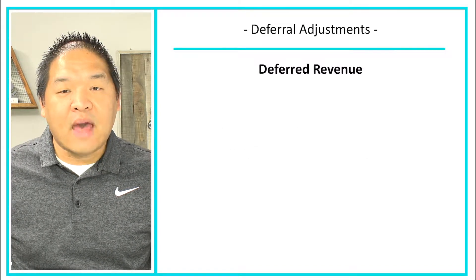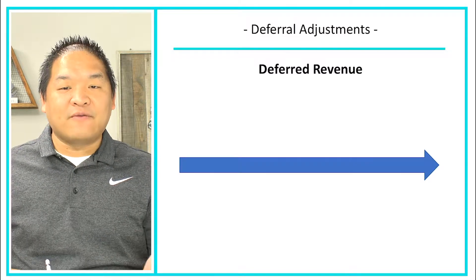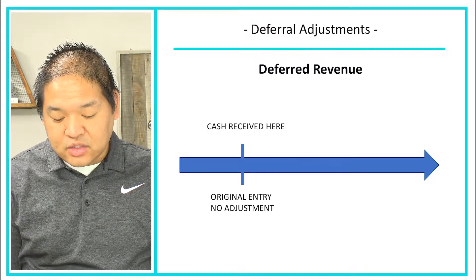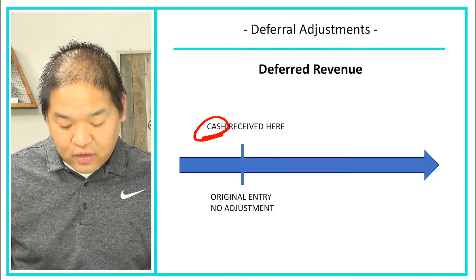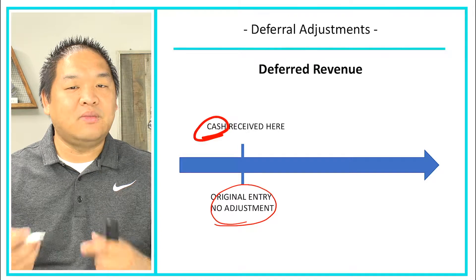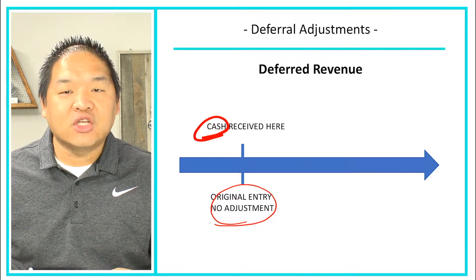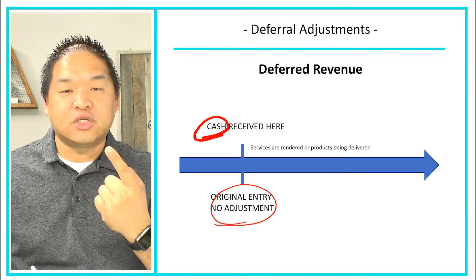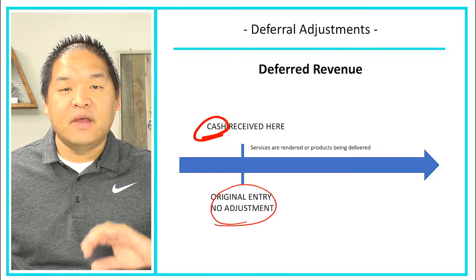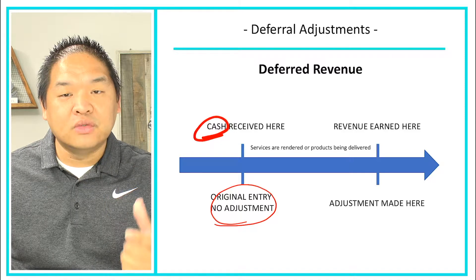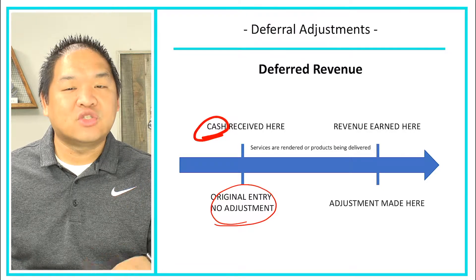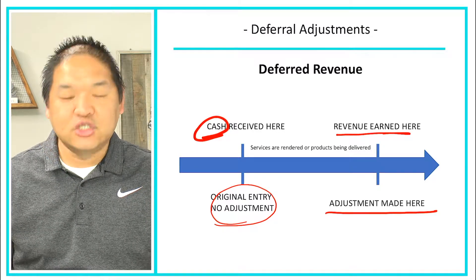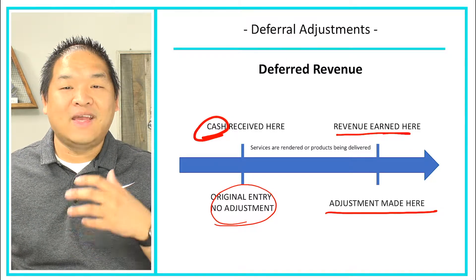From a visual standpoint, let's look at deferred revenue. This arrow represents time. Cash comes first — it's received at the beginning of the timeline. This wouldn't be an adjusting entry because it involves cash; this is just the original entry. Someone gives us cash and we promise to perform a service or deliver a product later. As time goes on, we perform the service or deliver the goods, and once completed, we book the revenues. So we had a deferred revenue when they gave us the cash — now we switch that deferred revenue into revenues. This is when the adjustment is actually made.